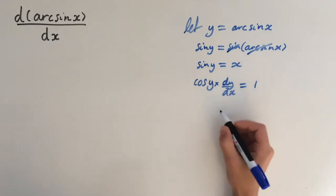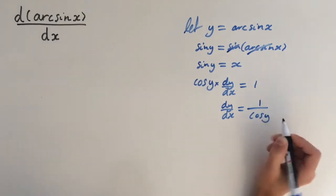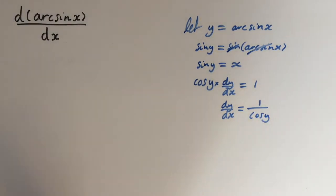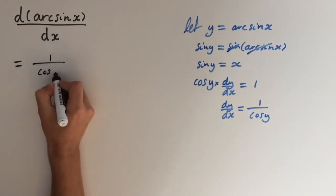So if we rearrange for dy/dx, this gives us 1 over cosine y. So I'm just going to write it over here. This equals 1 over cosine y.